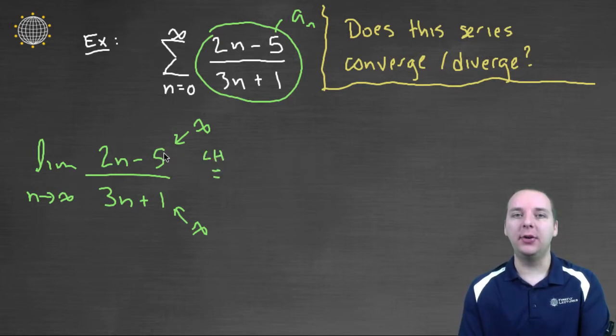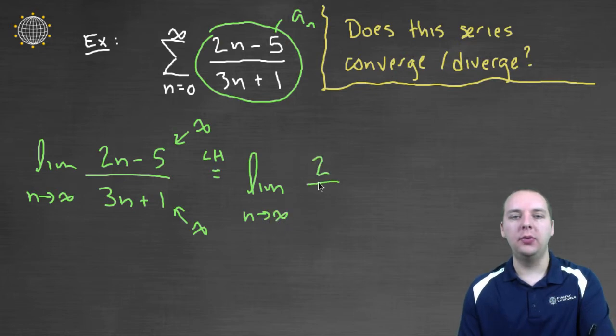So let's do that. So we have the limit as n goes to infinity of two over three, which will be two-thirds.